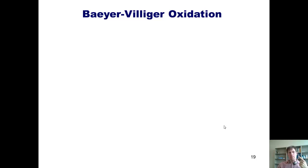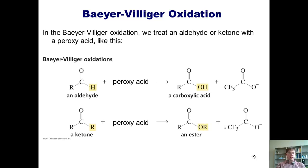The next reaction is absolutely revolutionary — it will bring kings to their knees, empires to ruin, and monkeys to clearance sales at Walmart. It is the Baeyer-Villiger oxidation. If you begin with an aldehyde or a ketone and treat it with a peroxy acid, what you will get is a carboxylic acid or an ester, respectively.